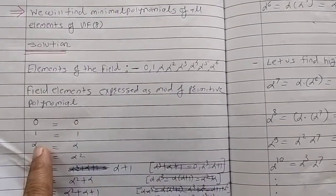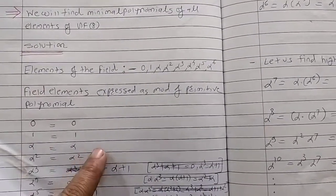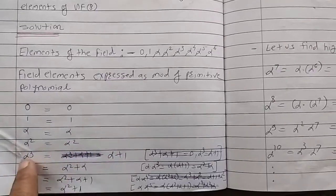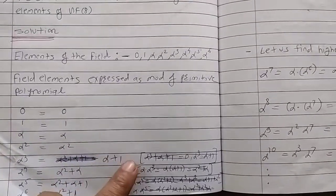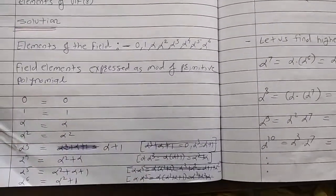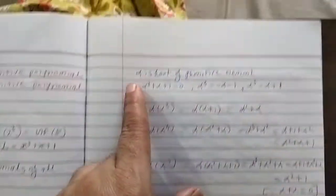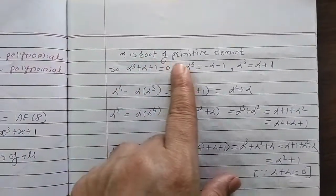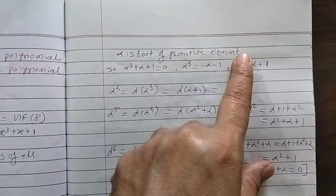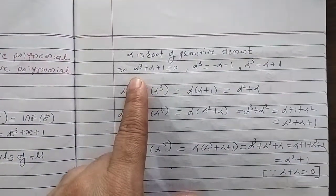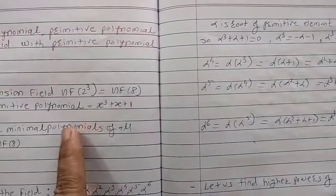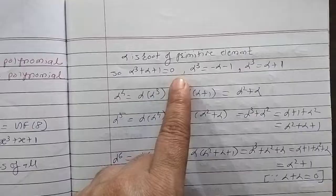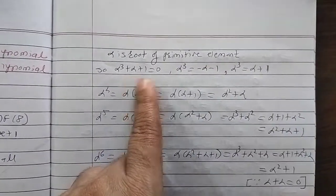0 is expressed as 0, 1 as 1, α as α, α² as α². α³ is equal to α + 1. How does this come? Here α is a root of the primitive polynomial, so substituting: α³ + α + 1 = 0, because α is a root. So α³ = −1 − α.